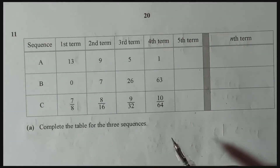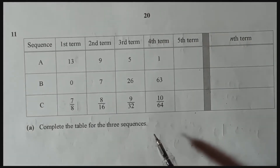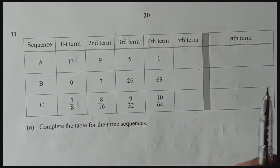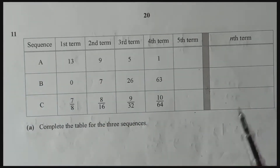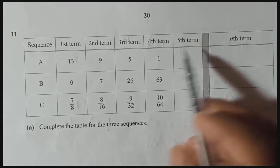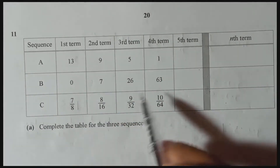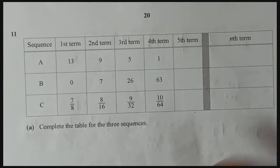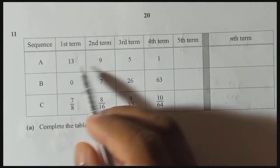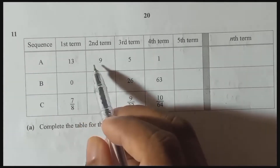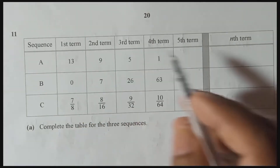In question number 11, they give us a sequence. This is a sequence question. They tell us to find the fifth term — they give three sequences here and we need to find the fifth term and also the nth term. The first one: you can see here 13, 9, 5, 1 and so on.